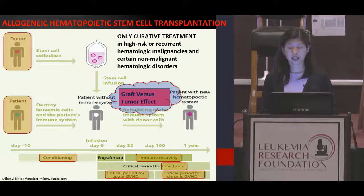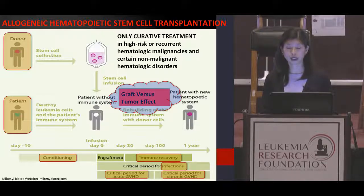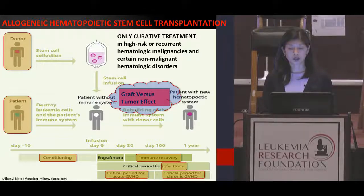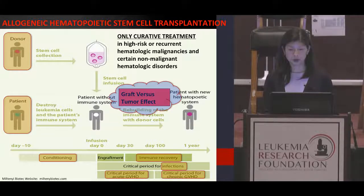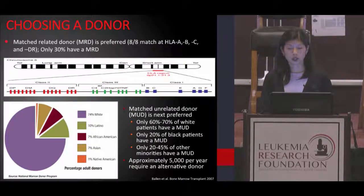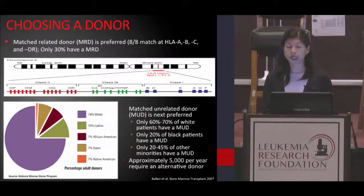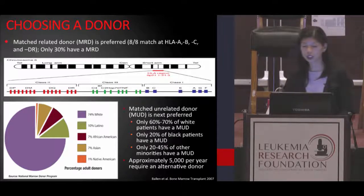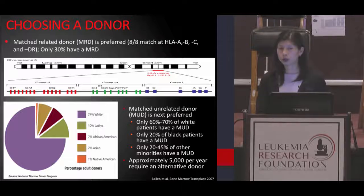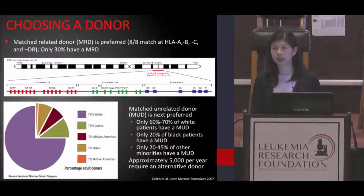Here I highlight some key points during the transplant process, which are all also active areas of research in transplant medicine currently. During this discussion, we'll focus on a few of them. So let's start with the donor. Given a choice, our first choice of donor is typically a matched related donor. This is a sibling who's matched 8 out of 8 at locations called HLA-A, B, C, and DR. These are encoded on chromosome 6, of which we inherit two copies, one from our mother and one from our father.